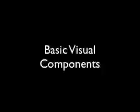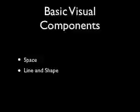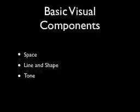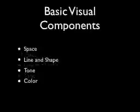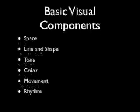All these components are perceptual. They're not tangible the way a car or a cell phone would be. They're perceptual, meaning they're how we perceive them. The first one is space. The second one is line and shape. Then we have tone, color, movement, and rhythm.